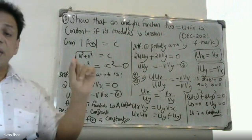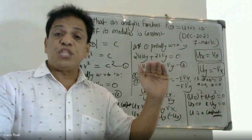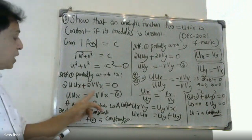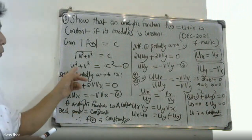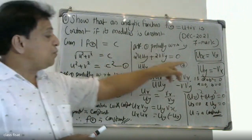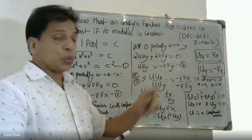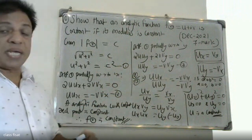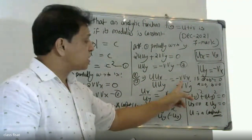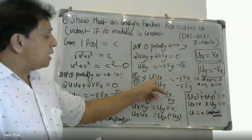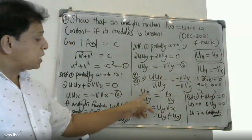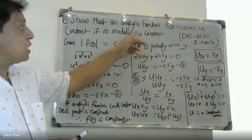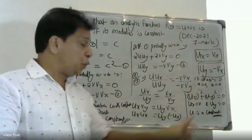Differentiating equation 1 with respect to x: 2u·ux + 2v·vx = 0, giving u·ux = -v·vx (equation 2). Differentiating with respect to y gives equation 3. Dividing: (u·ux)/(u·uy) = (-v·vx)/(-v·vy), which is equation 4. Using the Cauchy-Riemann equations and cross-multiplying leads to the conclusion.